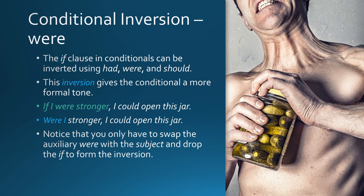Conditional inversion with 'were': the if-clause can be inverted using were, giving a more formal tone. 'If I were stronger, I could open this jar' — 'Were I stronger, I could open this jar.' Simply swap the auxiliary 'were' with the subject and drop the 'if' to form the inversion.